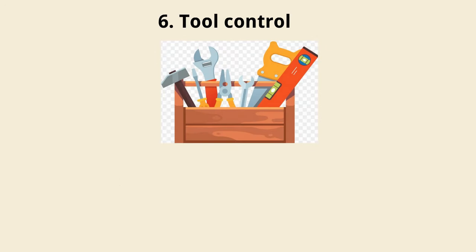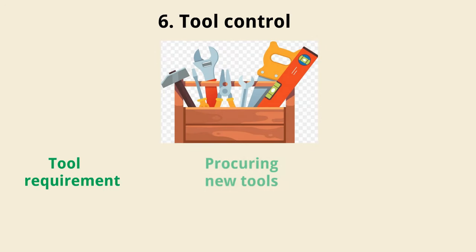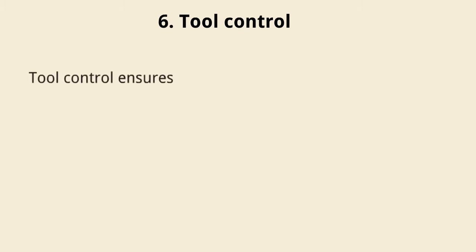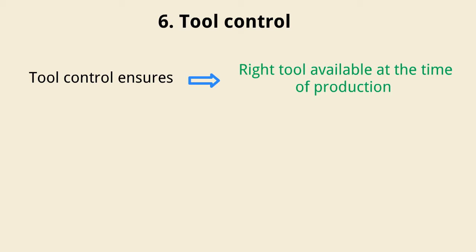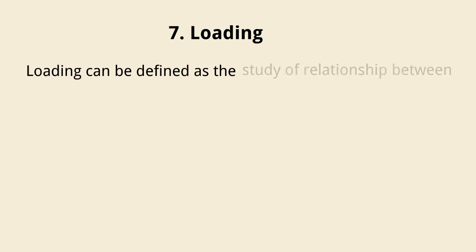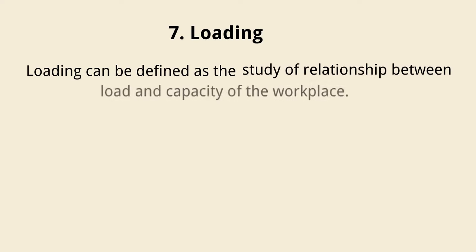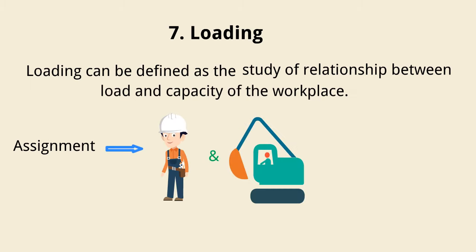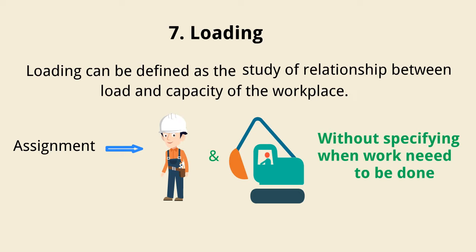6. Tool control. Tool control is the process of determining tool requirements, procuring new tools, and controlling tools once they have been produced. Tool control ensures that the right tool will be available at the time of production. Lost time resulting from incomplete tool planning can be expensive as well as causing work to delay. 7. Loading. Loading can be defined as the study of the relationship between load and capacity of the workplace. Loading is the assignment of work given to the labor and machinery without specifying when the work needs to be done.